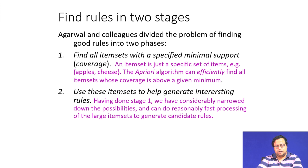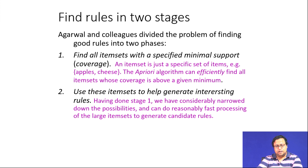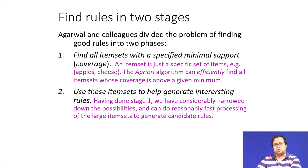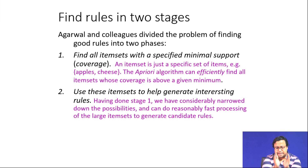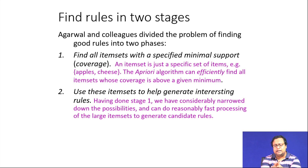We find the rule in two stages. First, find all items with a specified minimal support. You will not do it for everybody — you only find those item sets which meet the minimum support threshold. An item set is a specific set of items; for example, apples and cheese is an item set. We choose combinations which have a minimum cutoff — minimum support — such as at least 1 percent of the whole dataset.